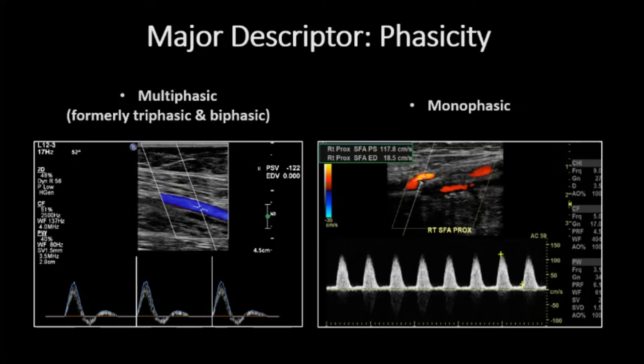As peripheral arterial disease advances, the waveform in a disease segment will gradually lose phasicity until only a monophasic signal is detected, reflecting only unidirectional antegrade flow through the cardiac cycle.